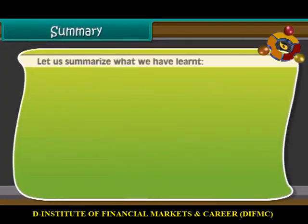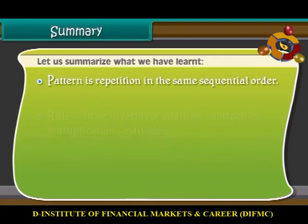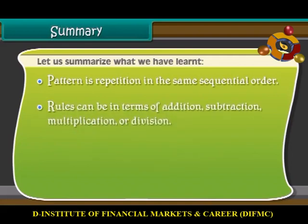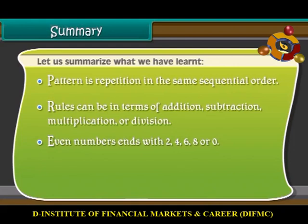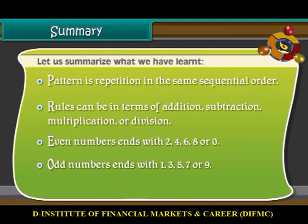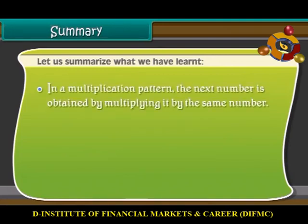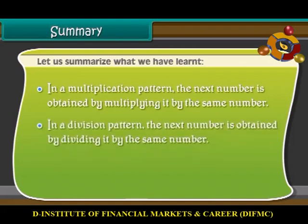Summary. Pattern is a repetition in the same sequential order. Rules can be in terms of addition, subtraction, multiplication, or division. Even numbers end with 2, 4, 6, 8, or 0. Odd numbers end with 1, 3, 5, 7, or 9. In a multiplication pattern, the next number is obtained by multiplying by the same number. In a division pattern, the next number is obtained by dividing by the same number.